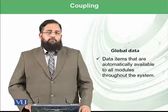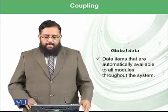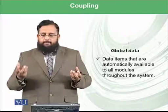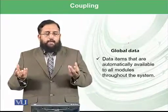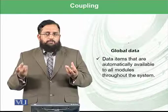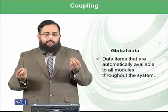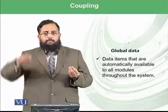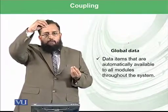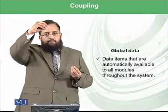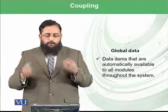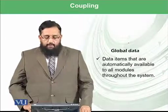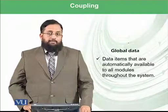Then there is another concept called global data. This means that data items are automatically available to all modules. For example, if module A and module B both process data element X, but X is not the property of any particular module — it resides somewhere accessible to both modules — this is called global data. These are data items that are automatically available to all modules throughout the system.